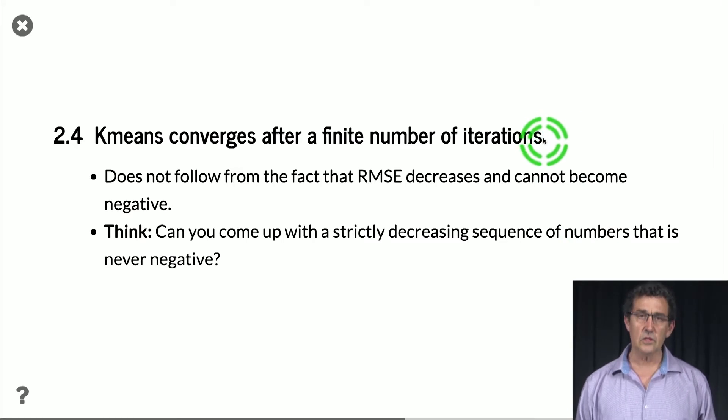So using these two things, the decrease of the RMSE and the relation to subsetting the set of examples, we can show that k-means has to converge after a finite number of iterations. And that simply follows from the fact that there is only a finite number of ways to partition the examples into k subsets. And for each one of them, there is some RMSE. And so if the RMSE decreases, then there must be some point at which it will stop decreasing and stay the same forever.